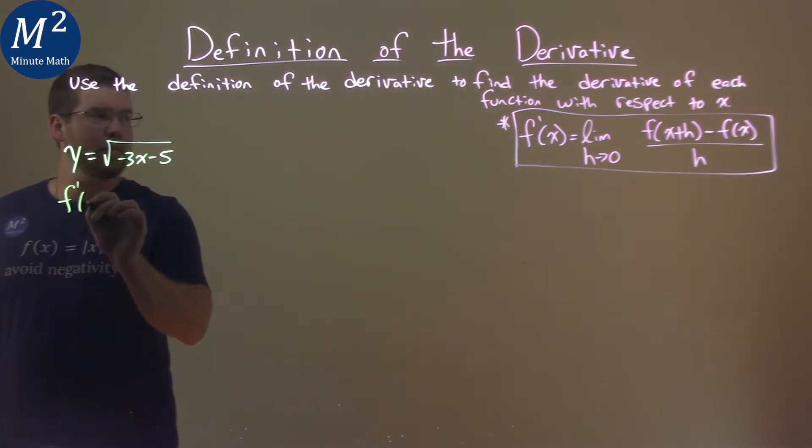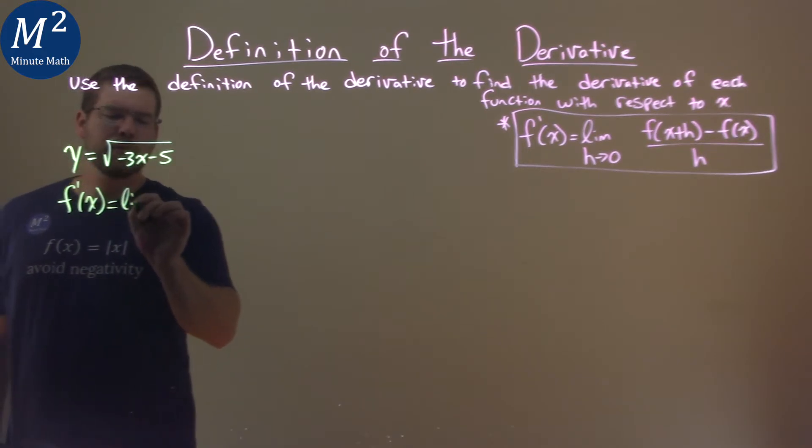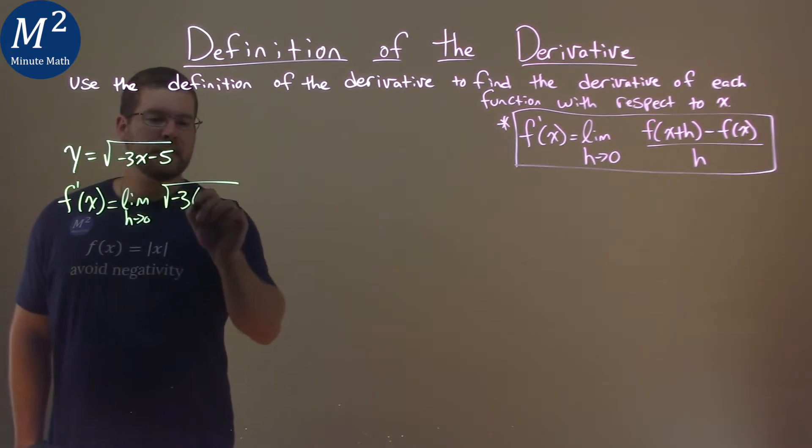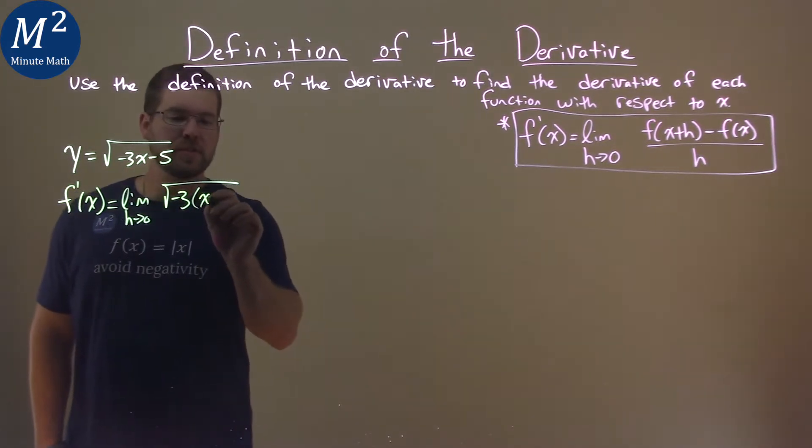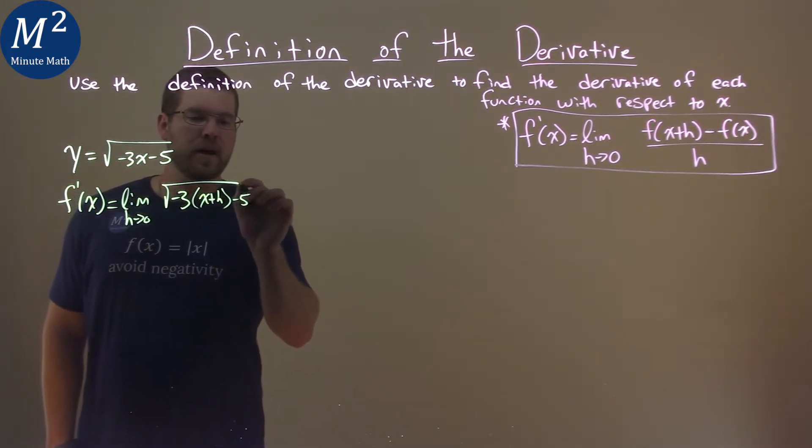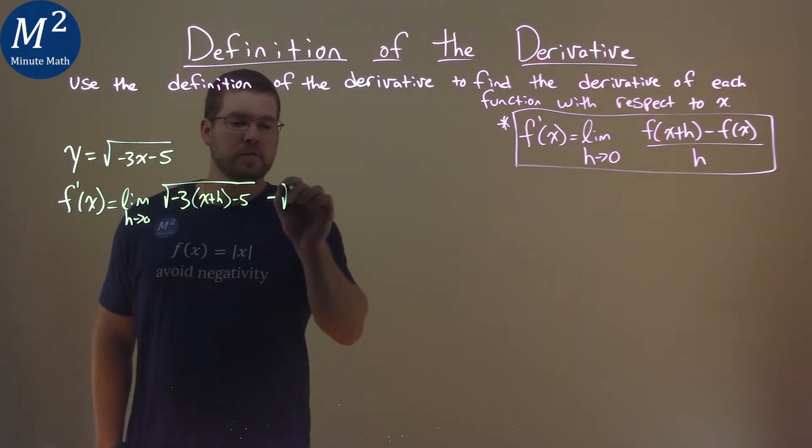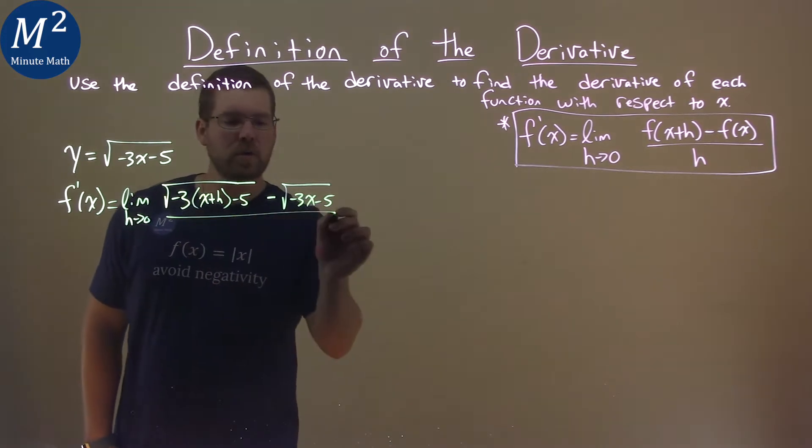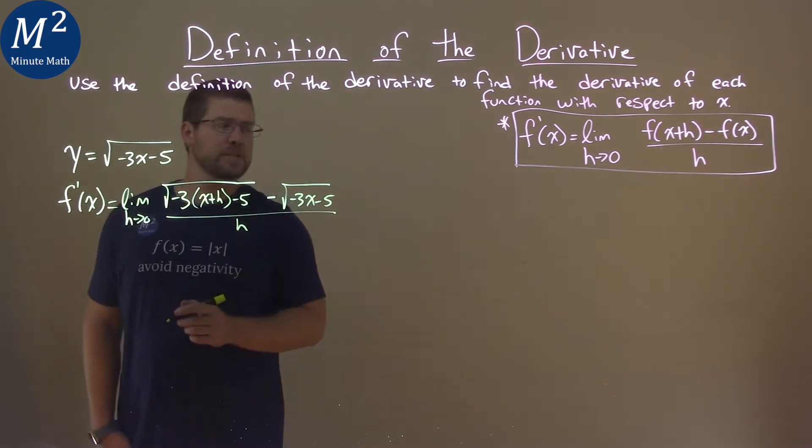f prime of x is equal to the limit as h approaches 0 of our function, negative 3 times x plus h minus 5, subtracted by our original function, negative 3x minus 5, all over our good old h. Not too bad.